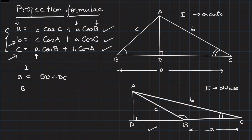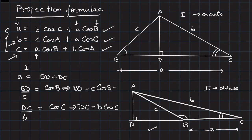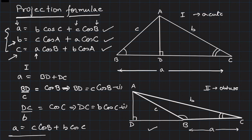In Case 1, a = BD + DC. In triangle ABD, BD/c = cos B, so BD = c·cos B. In triangle ADC, DC/b = cos C, so DC = b·cos C. Therefore a = BD + DC = c·cos B + b·cos C. Hence this relation is proved. The other two formulas can also be proved with similar arguments.